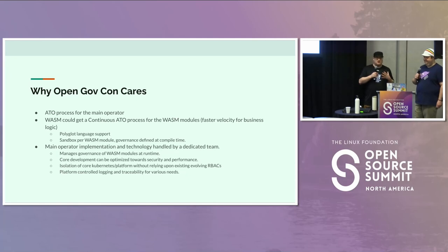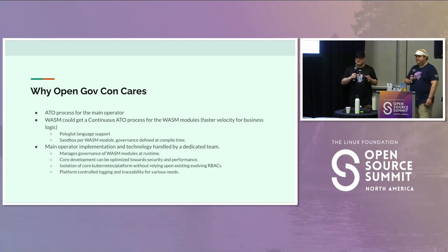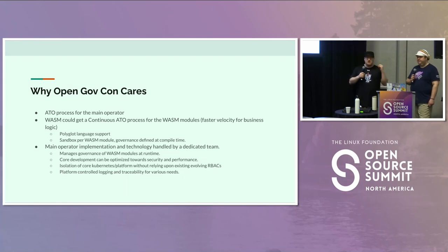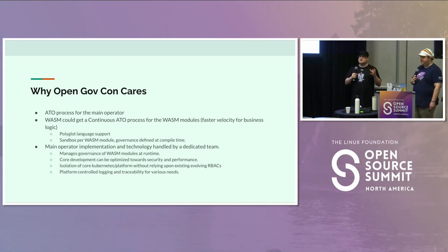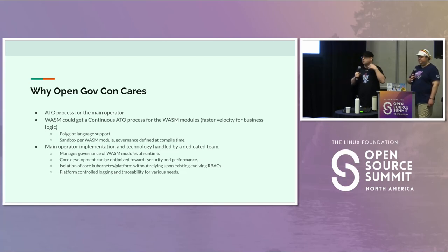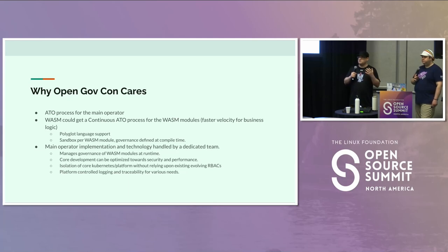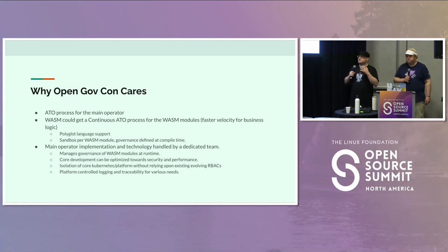This is part of the reason why OpenGovCon cares and why we're part of this track. The ATO process — if we can mix in fast development cycles while still having security and governance, and allow WASM modules to be polyglot (meaning any language you want to write your code in), the idea is you can use existing talent. You don't have to throw out that talent and knowledge or rehire — you can tweak it a little and retain a lot of that domain knowledge and carry it forward.